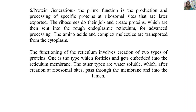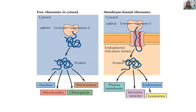The functioning of the reticulum involves two types of proteins: those that fortify and become embedded in the reticulum membrane, and water-soluble types that, after creation at ribosomal sites, pass through the membrane and reach their destination. In prokaryotes, free ribosomes synthesize proteins as soon as mRNA attaches, and the proteins undergo modification. In the nucleus, proteins synthesized pass inside where they have their function.